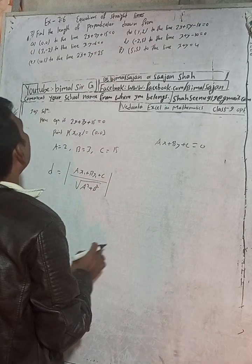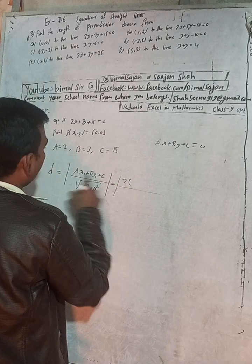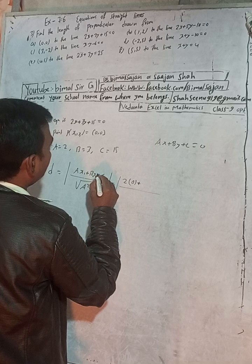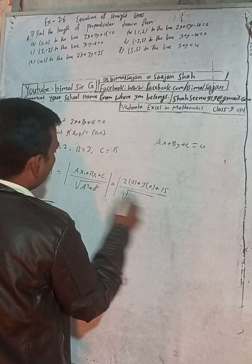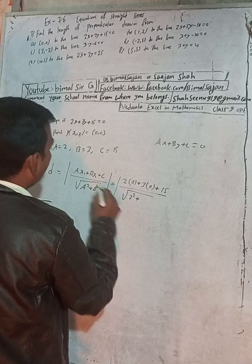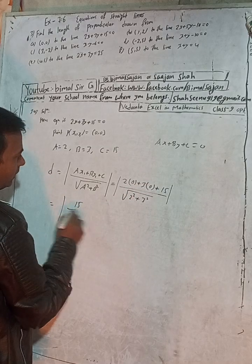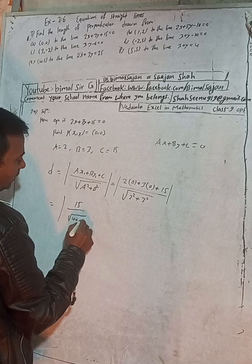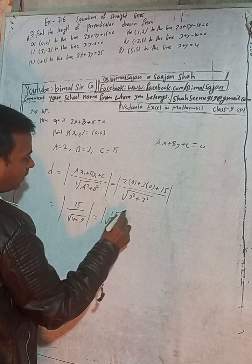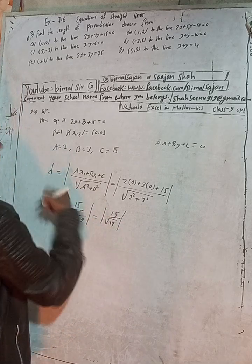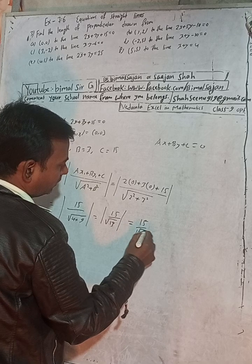Substituting the values: a = 2, x1 = 0, b = 3, y1 = 0, c = 15. So d = |2(0) + 3(0) + 15| / √(2² + 3²) = |15| / √(4 + 9) = 15 / √13. The modulus is used because length is always positive. So the answer is 15/√13 units.